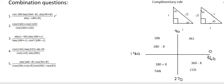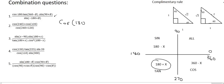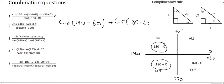Moving on to number 2. Cos 240 — you have to try to reduce that. 240 is in quadrant three, so you rewrite it as 180 plus 60. Then there's plus cos 120 — 120 is in the second quadrant, so we rewrite it as 180 minus 60. And then the denominator is just 240 plus 120 in brackets, which is just 360.